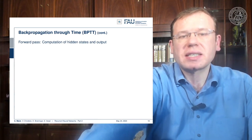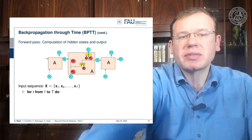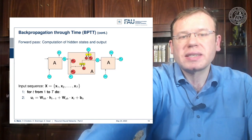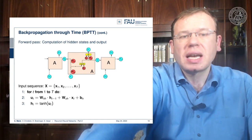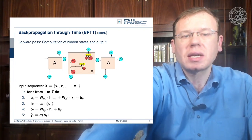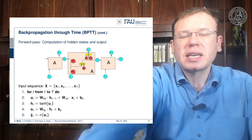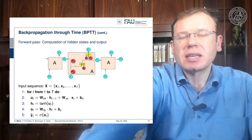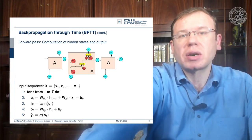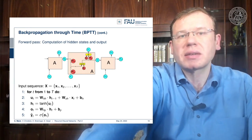The forward pass computes the hidden states and outputs. We have an input sequence x1 to xT where T is the sequence length. We compute ut, the linear part before the activation function, then apply the activation function to get the new hidden state ht. We compute ot, the linear part before the sigmoid, then apply the sigmoid to produce ŷ, the output of our network. This unrolls the entire network and produces all information needed to compute the weight updates.